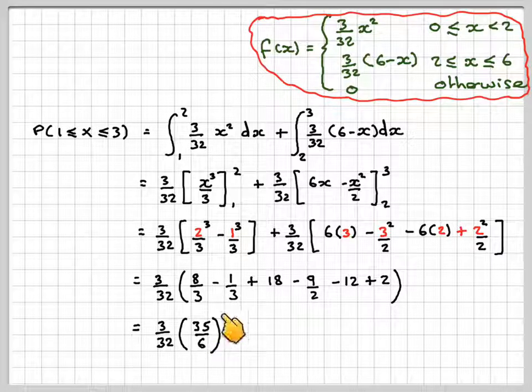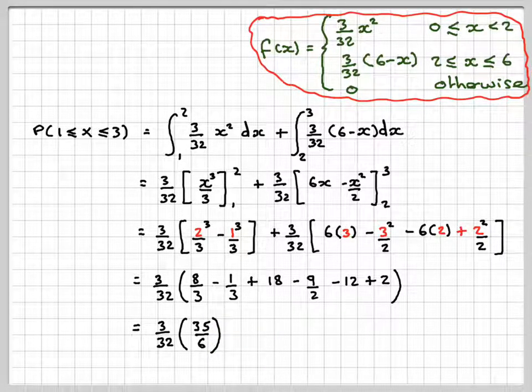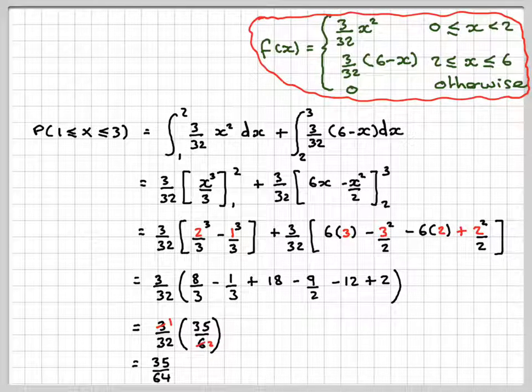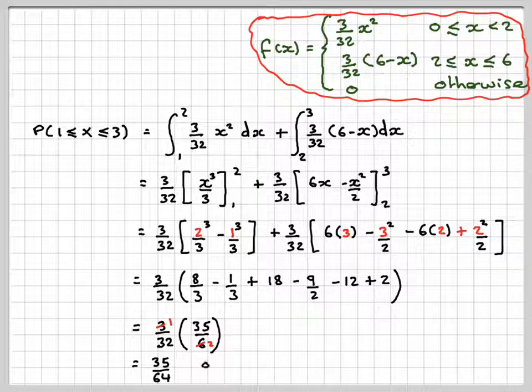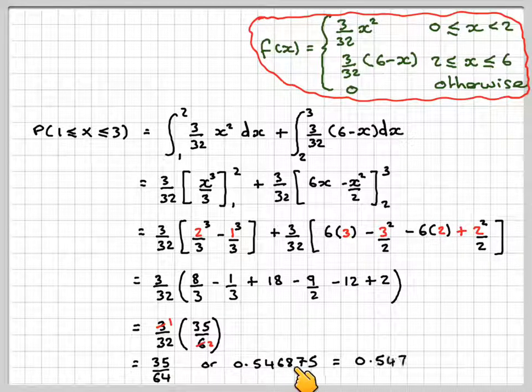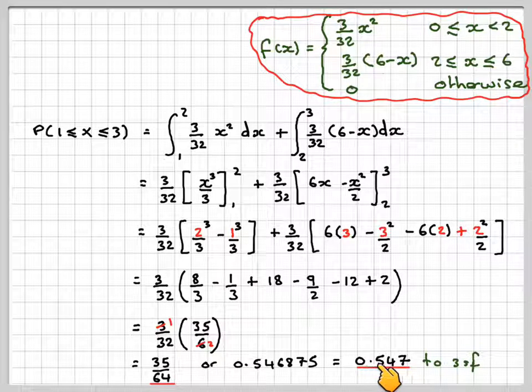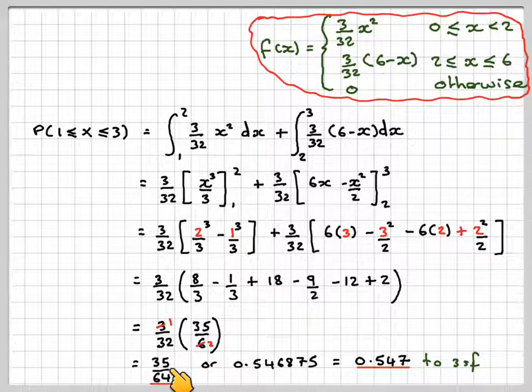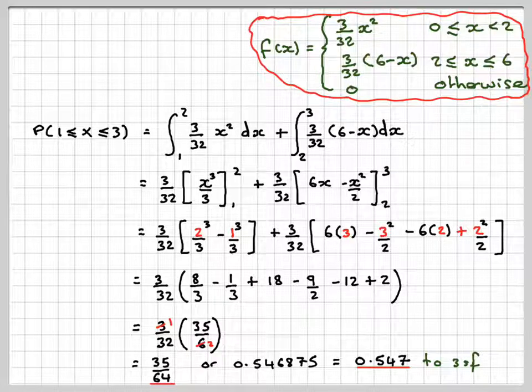So that's 3/32, and if we work all this out on our calculator, we're going to get 35/6. The 3 and the 6 will cancel, and we get 35/64 as the exact answer. Or if we work it out on a calculator, we will get that, and then we'll round it off to three significant figures.